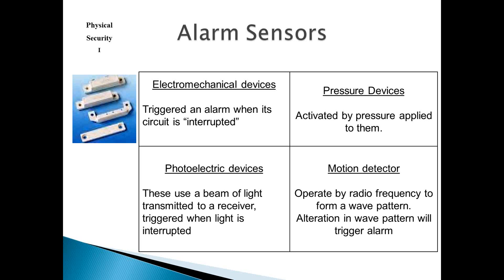Pressure devices work whenever you step on them — it creates a contact because you have two wafer-thin sensors. Whenever they're pushed into contact with each other, it activates the alarm. A motion detector is operated by radio frequency to form a wave pattern. Any alteration in that wave pattern will trigger an alarm. That's the old balanced magnetic switch up there — you can see how it looks whenever you take it apart. Pretty simple device.